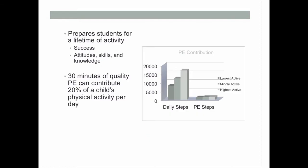We need to prepare kids to be active for a lifetime and provide them the attitude, skills, and knowledge to do so. Research from Chuck Morgan at the University of Hawaii shows that 30 minutes of quality physical education can contribute as much as 20 percent of a child's total physical activity. We measured students' activity levels with pedometers all day, and during PE with separate pedometers. Low-active, middle-active, and high-active kids were all about the same during PE. Some low-active kids, if they weren't active during PE, were getting about 1,000 steps a day — so PE is clearly significant.